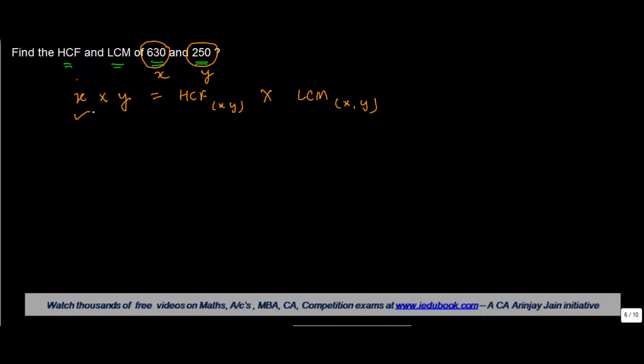Now what we know is we know these two numbers, but we need to find out their HCF and LCM. So let's say first we find out the HCF by the division method. Pretty simple - you divide the bigger number, which is 630, by the smaller one.